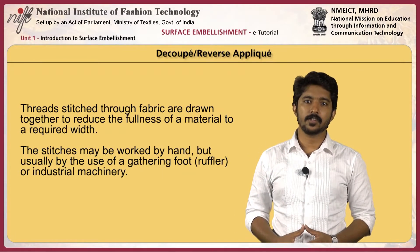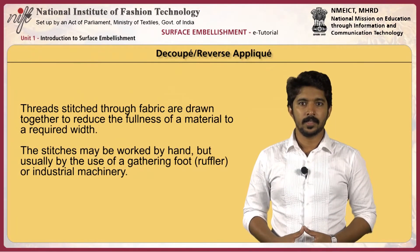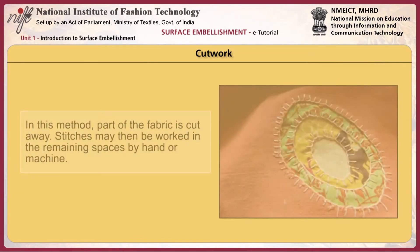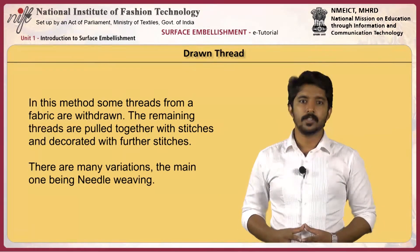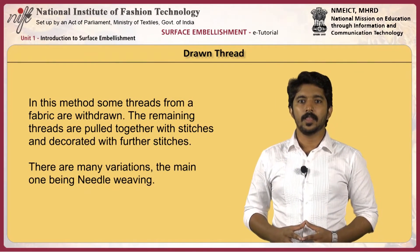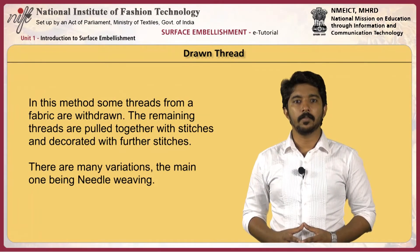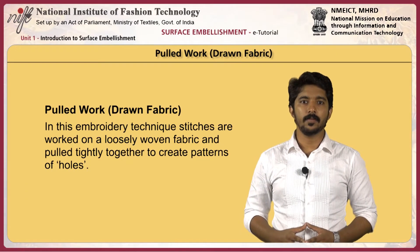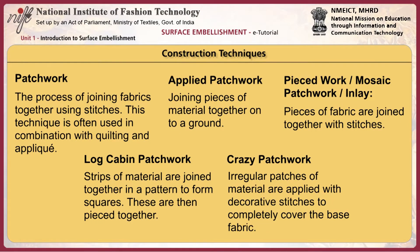Embellishment through subtraction includes reverse applique, cut work, drawn thread work, and pulled work. In the cut work method, part of the fabric is cut away and stitches may then be worked in the remaining spaces by hand or machine. In the drawn thread method, some threads from the fabric are withdrawn, and the remaining threads are pulled together with stitches and decorated with further stitches — the main variation being needle weaving. In the pulled work or drawn fabric embroidery technique, stitches are worked on a loosely woven fabric and pulled tightly together to create holes.